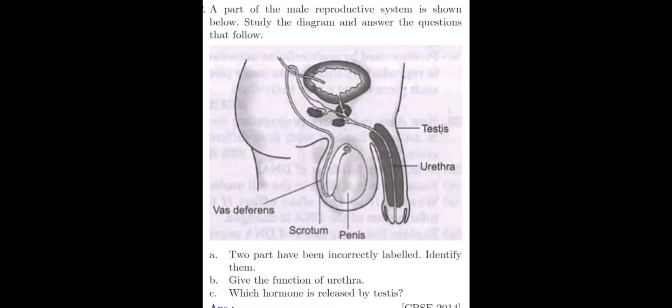Question number five. A part of the male reproductive system is shown below. Study the diagram and answer the questions that follow. Observe the diagram carefully and also study carefully the labelings shown in the diagram. And then read the questions. Here are three questions. Question A, two parts have been incorrectly labeled, identify them. Question B, give the function of urethra. Question C, which hormone is released by testis?